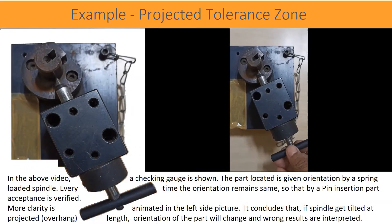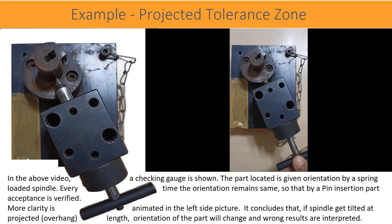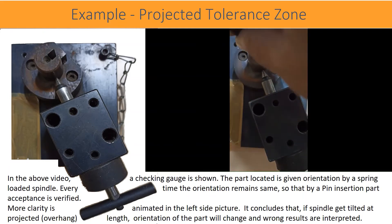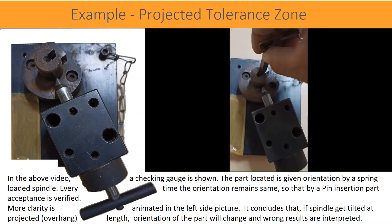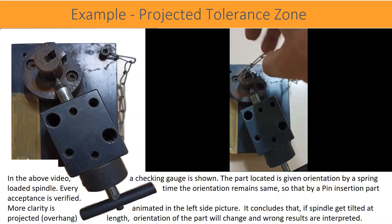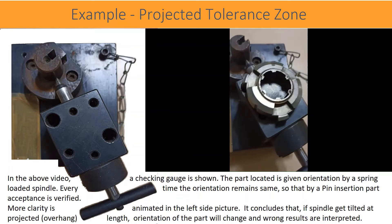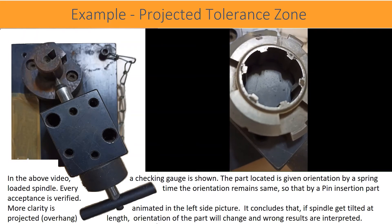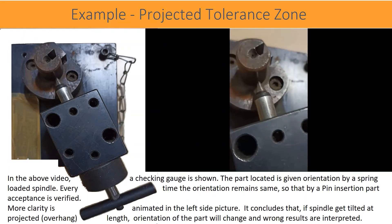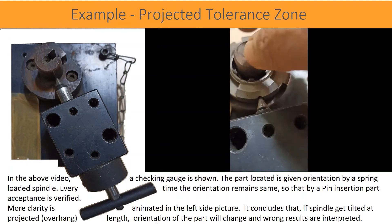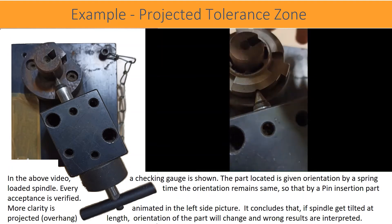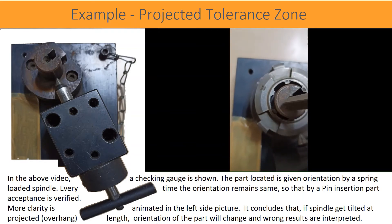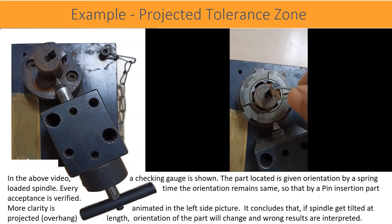In the above video, a checking gauge is shown. The part located is given orientation by a spring-loaded spindle. Every time the orientation remains the same, so that by a pin insertion the part acceptance is verified. More clarity is animated in the left side picture. It concludes that if the spindle gets tilted at the projected overhanged length, the orientation of the part will change and drawing results are interpreted.